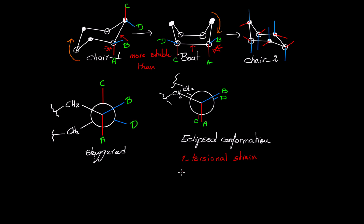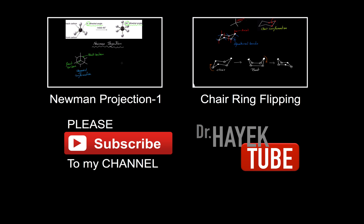The second strain is the steric strain between A and C, and D and B. There is no angular strain because in a chair conformation or in a boat conformation, the bond angles for every carbon are equal to 109.5 degrees.